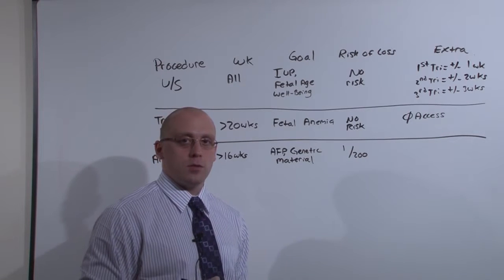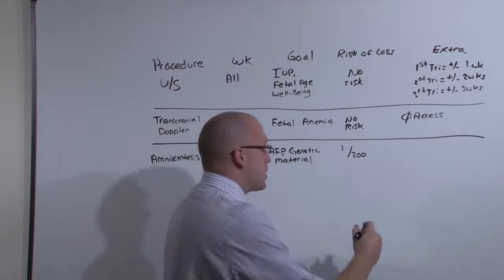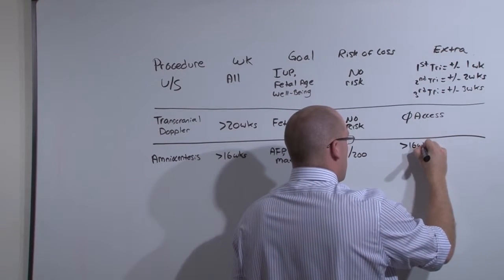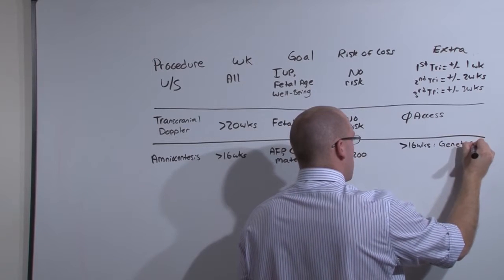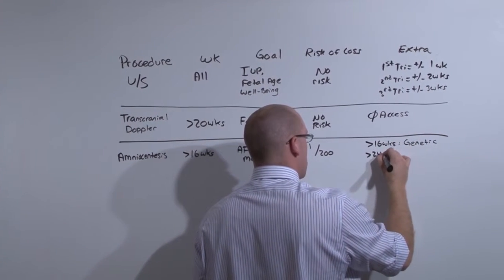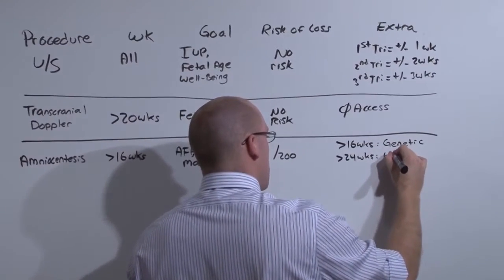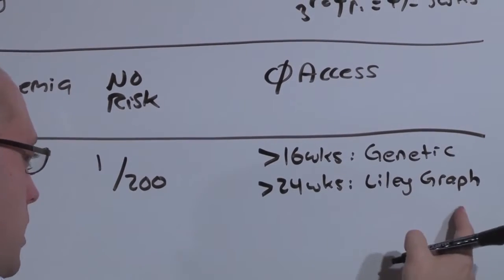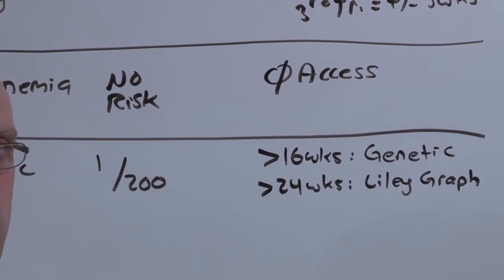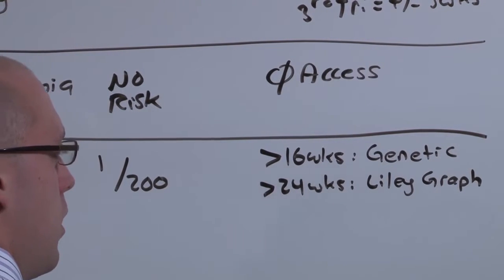When you do the amniocentesis will determine what you're doing it for. Because if it's in the very beginning of the second trimester, you're probably doing it to get genetic material. If you're doing it later on in the second trimester, you can also do it to assess anemia by plotting on a Lyle graph. This process of diagnosing fetal anemia has essentially been abandoned. The risk is too high and the benefits are very low. With transcranial Doppler and PUBS, you might as well just do those. But this is an old school thing you might still hear about.